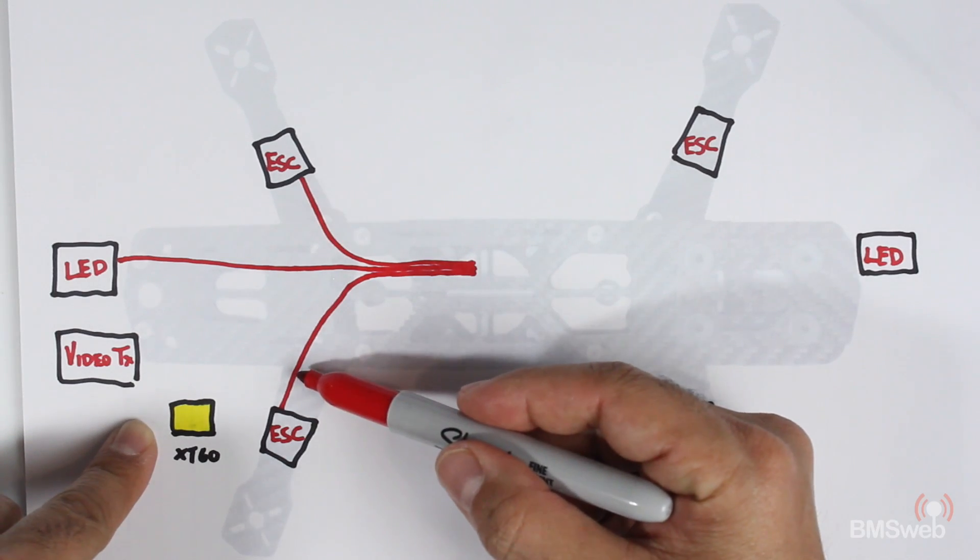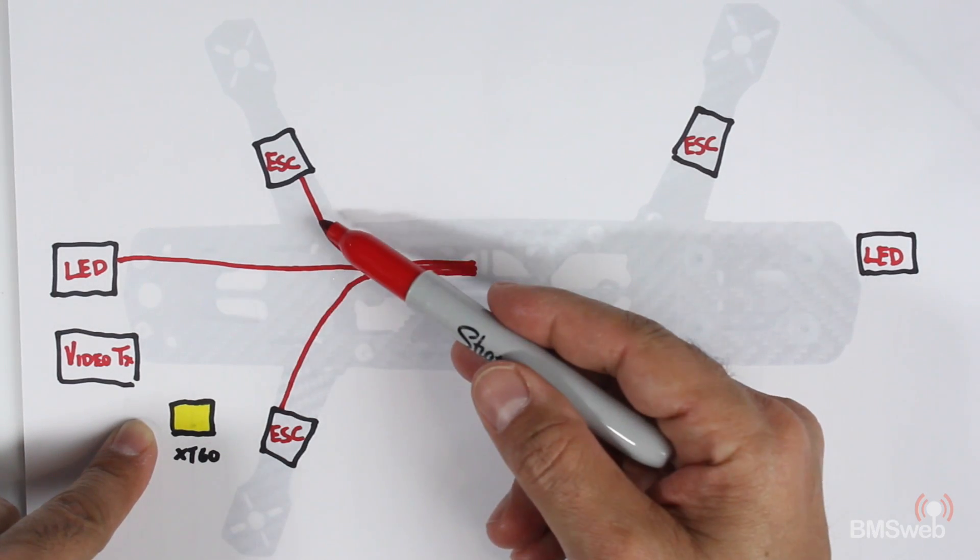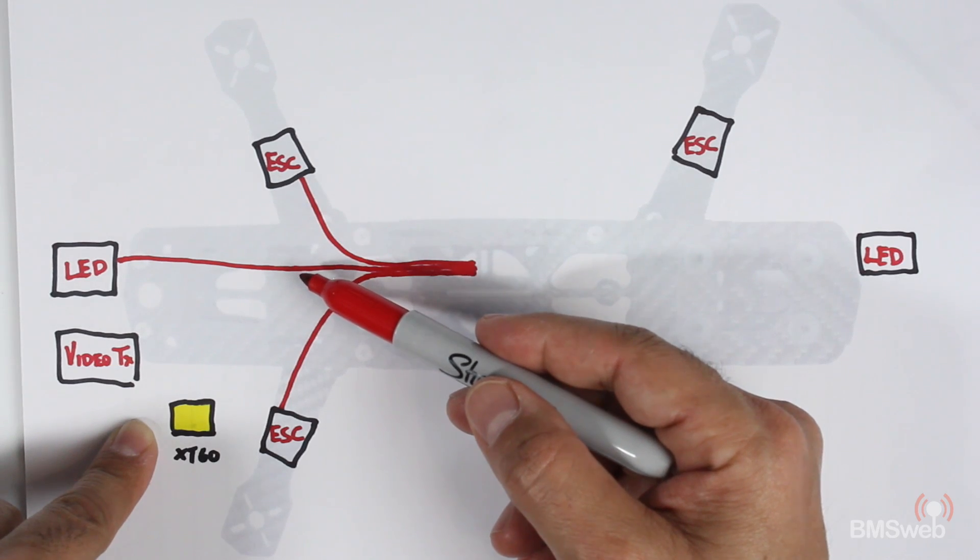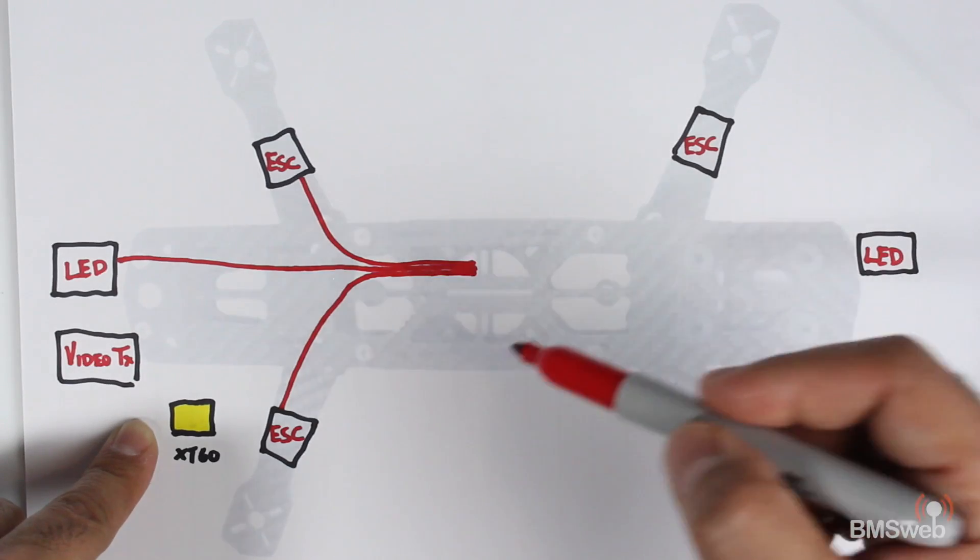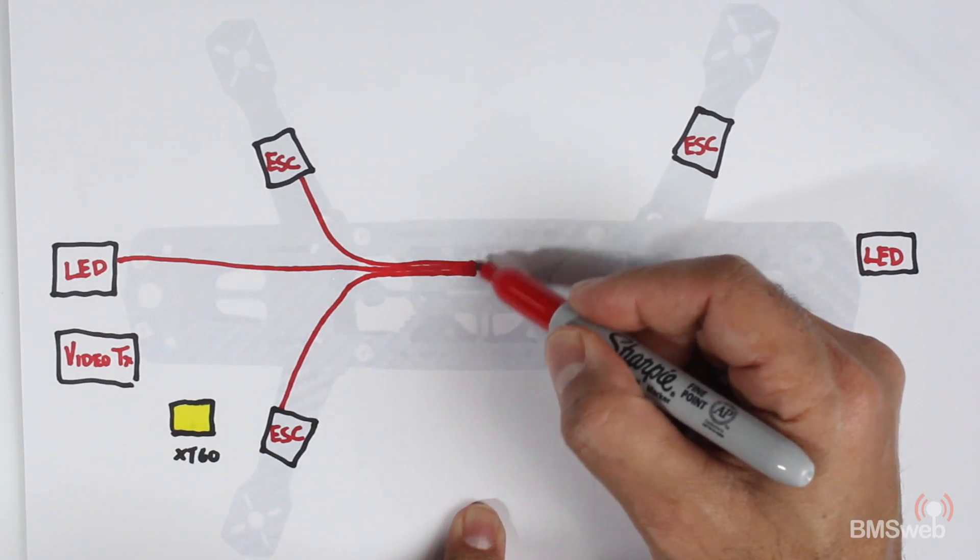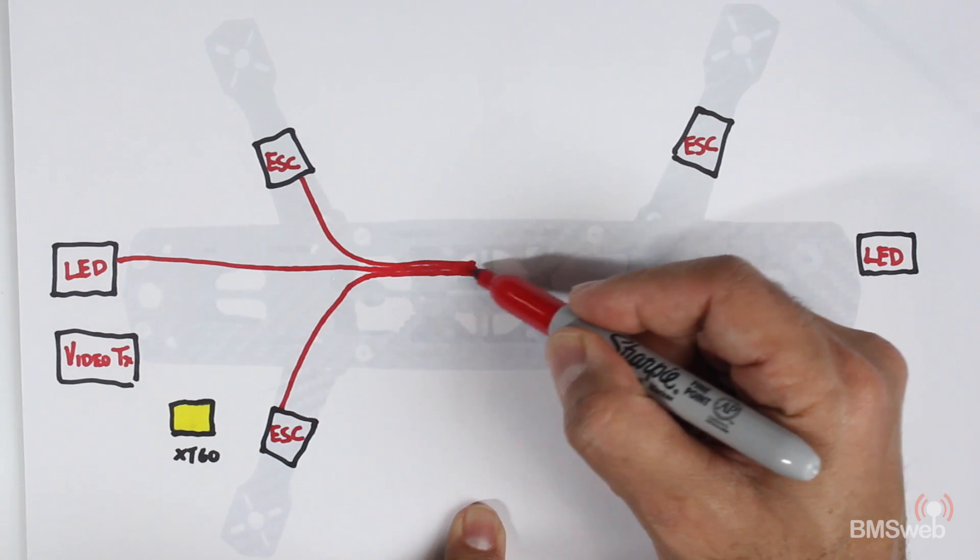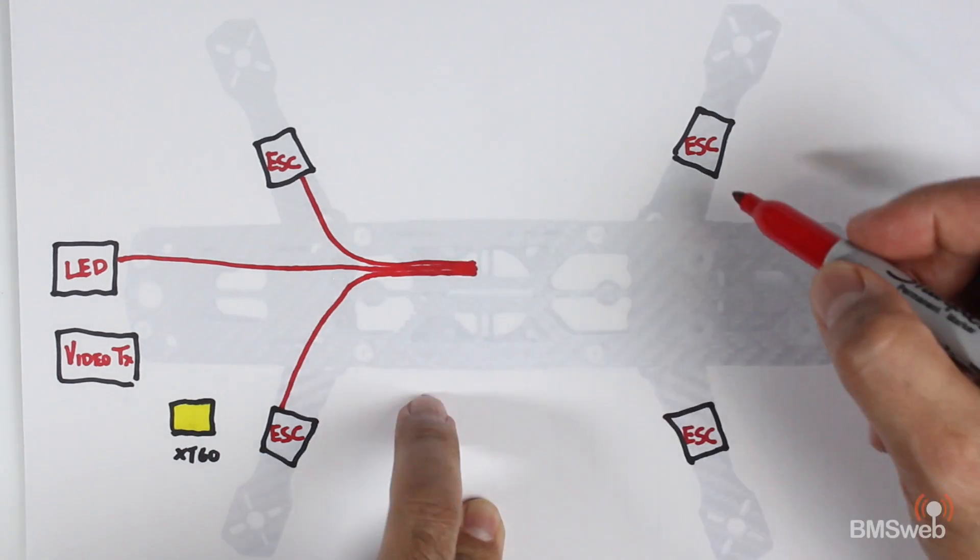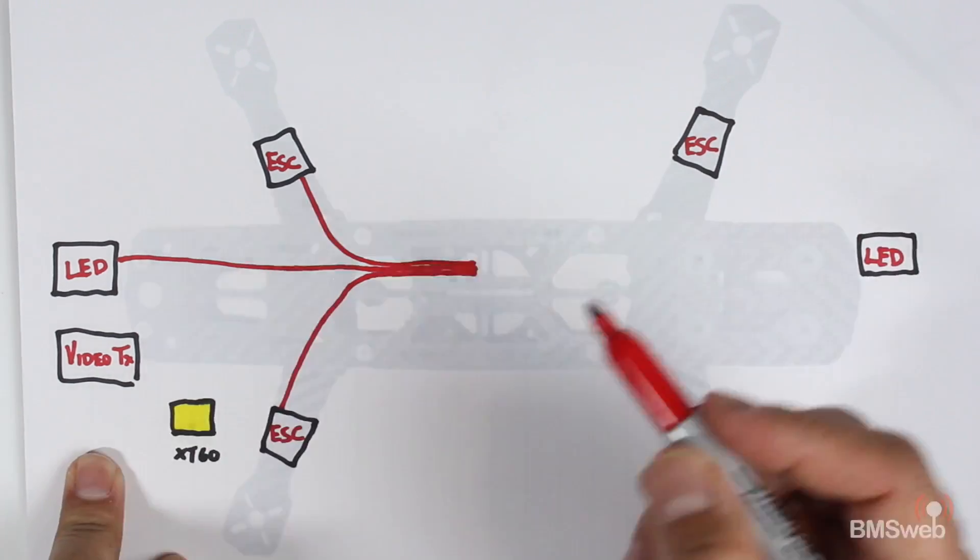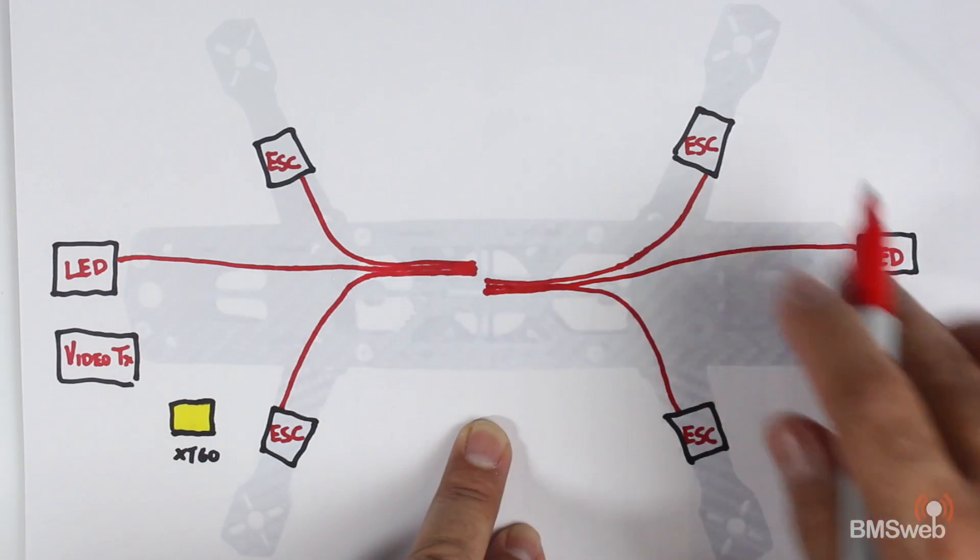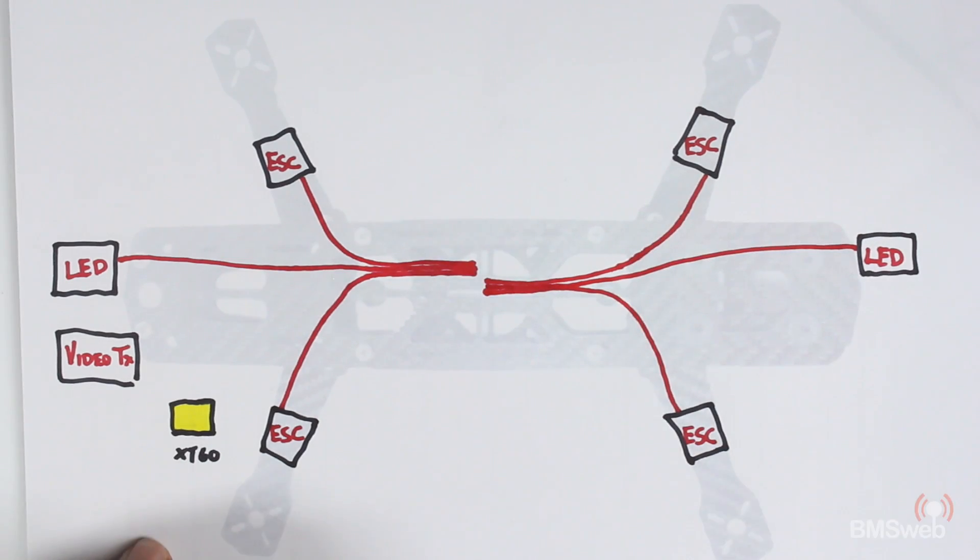So what you have here is the positive from one ESC, the positive from another ESC, and also the wire that's going to go to your LED—that's just servo cabling. Then what I do is strip this end, twist those together, and tin the actual ends. I'll draw the rest of it.